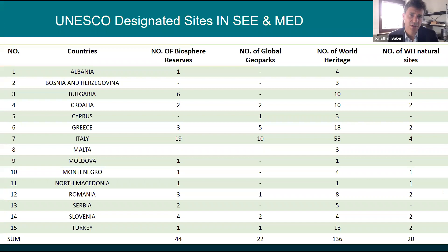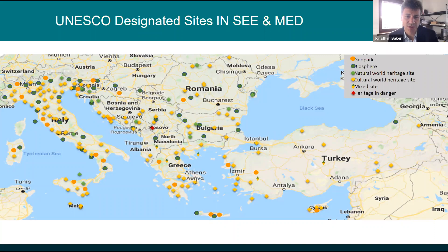Within Europe, specifically Southeast Europe and the Mediterranean, we cover 15 countries. Within those countries there are 44 biosphere reserves. To compare, we also have 22 geoparks and 136 World Heritage sites, of which 20 are natural. So there's really interesting coverage of UNESCO sites in the region — biosphere reserves, geoparks, and World Heritage sites.